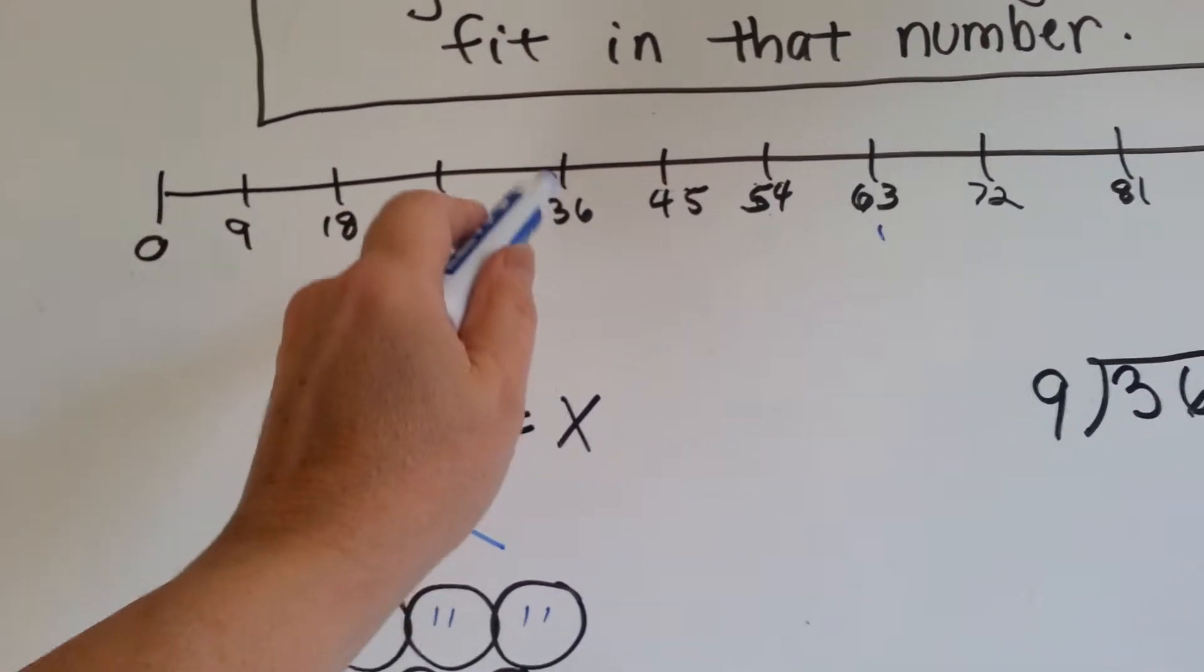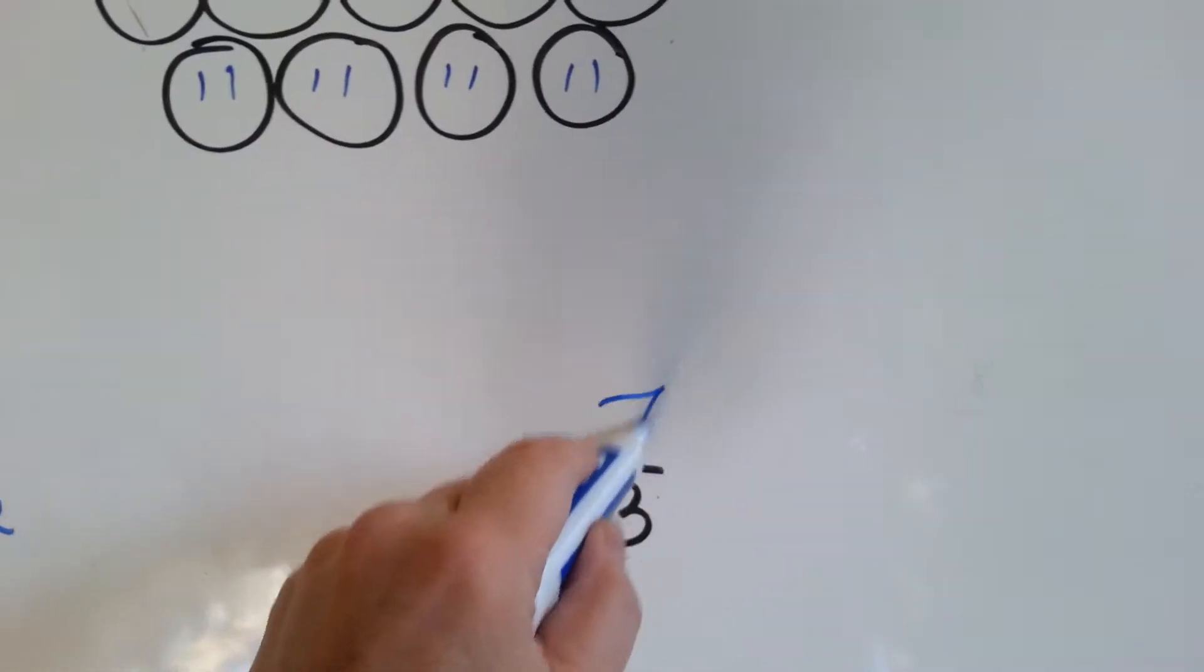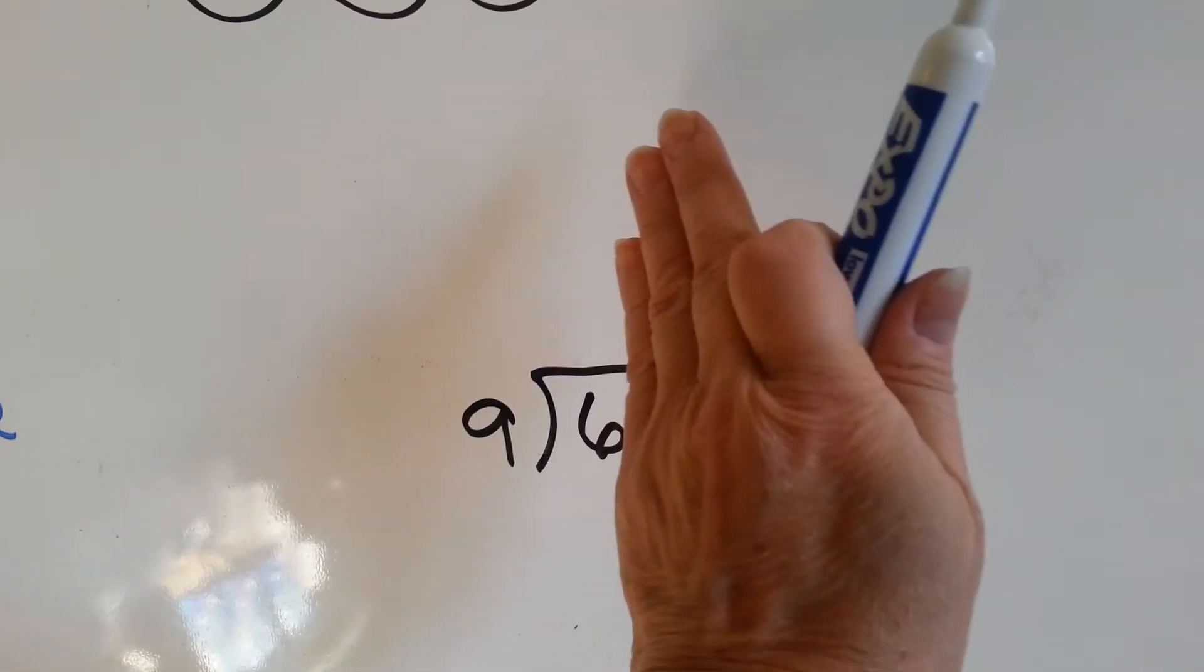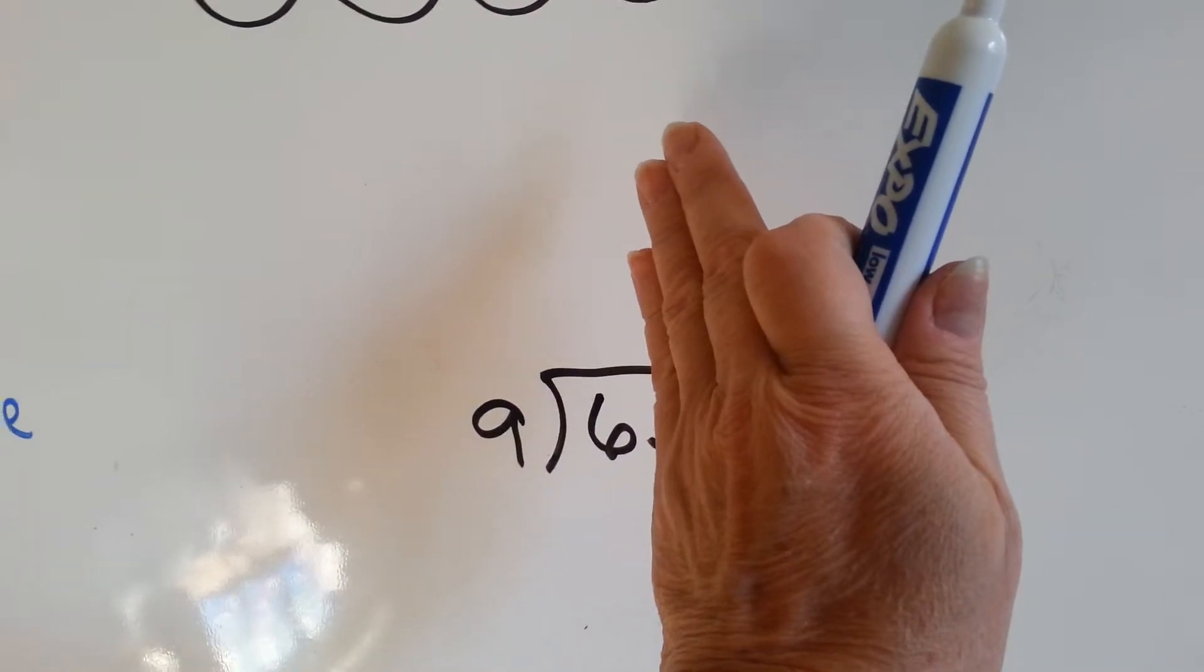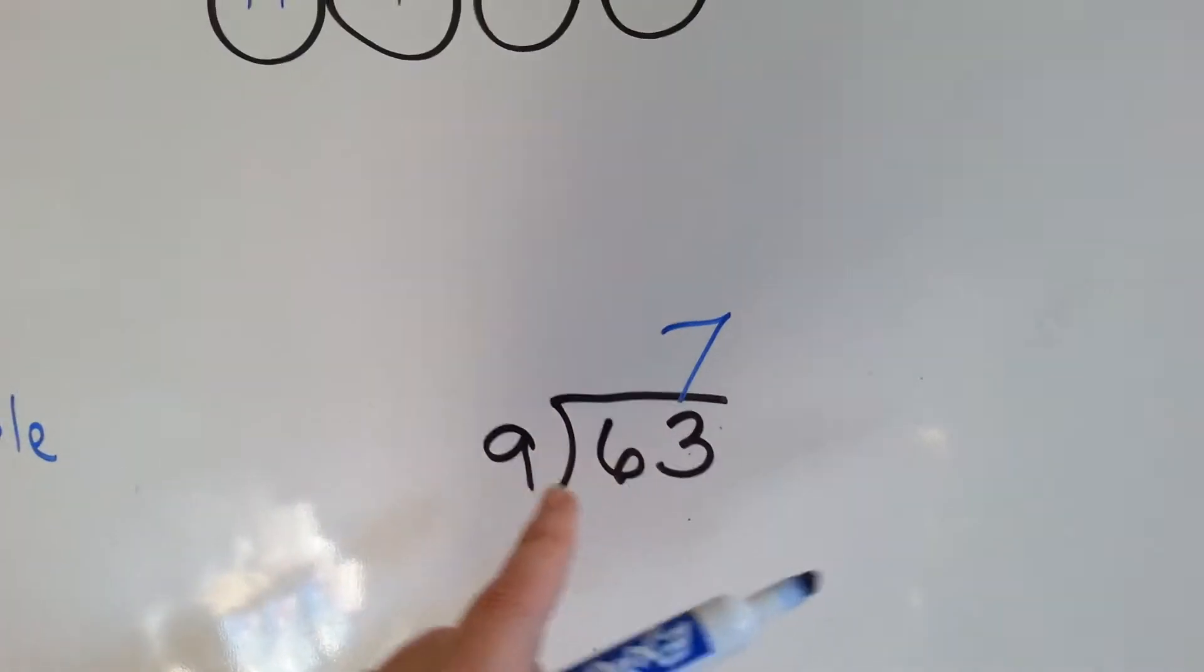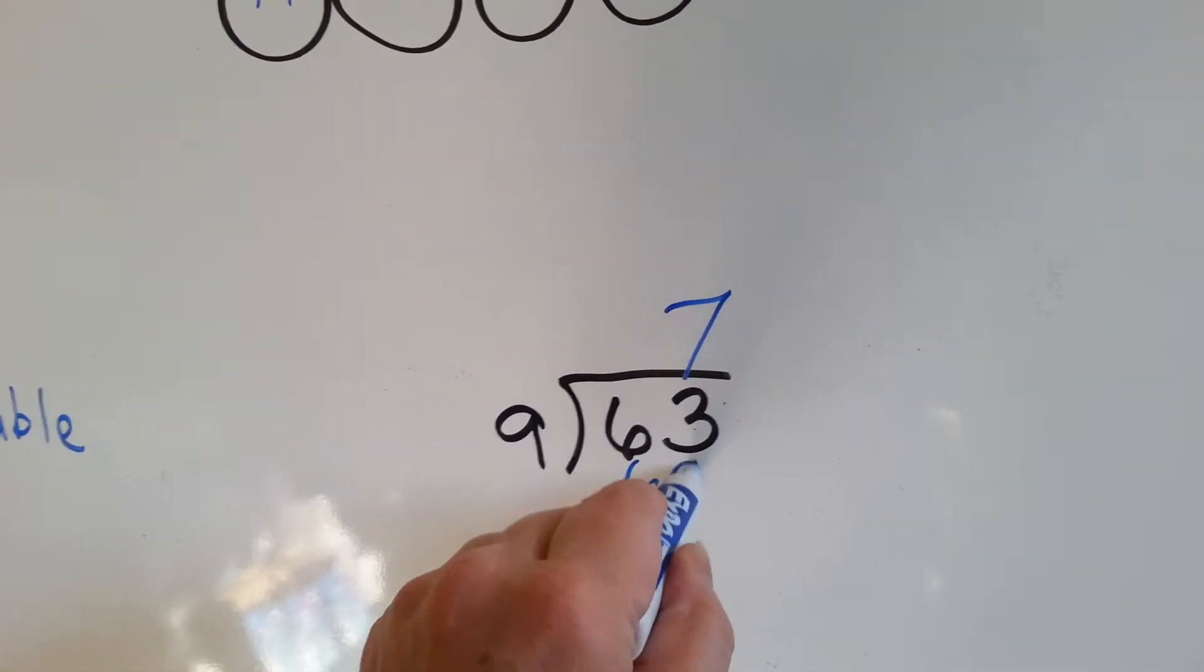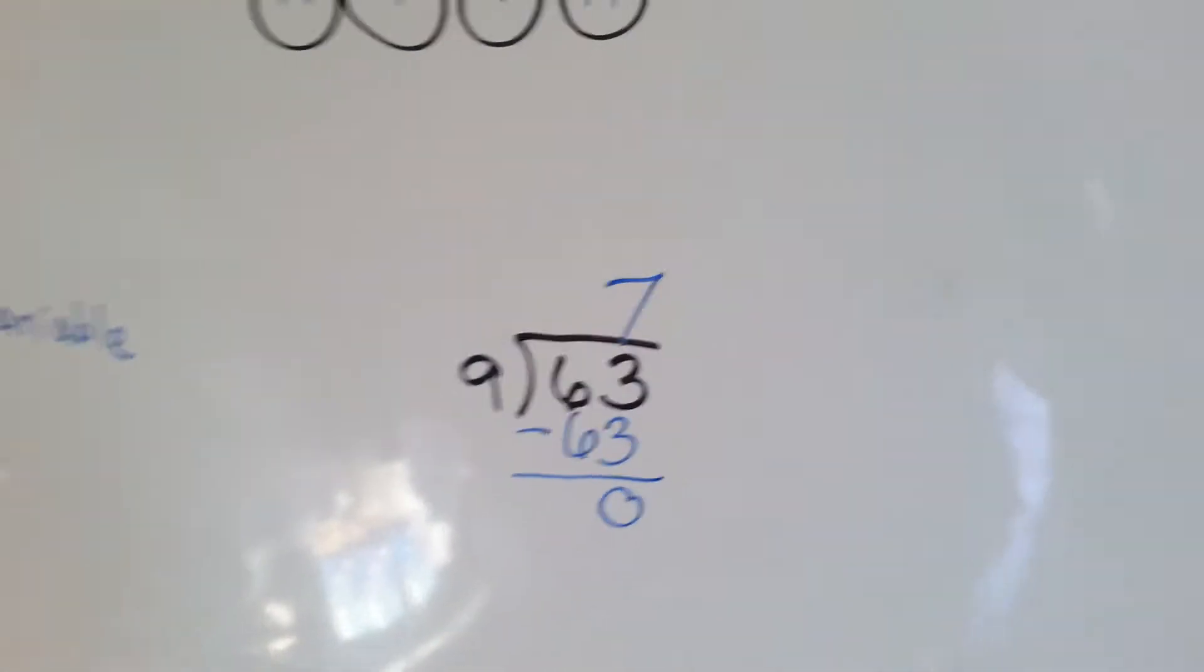1, 2, 3, 4, 5, 6, 7. We jump 7 times. And the 7 goes above the 3 because we're putting 9 into 63. We're not putting 9 into 6. If we were putting 9 into 6, which we know it won't fit, but if we did, then the answer would go above the 6. We're putting 9 into 63, so the 7 goes above the 3. Now we do our multiplication. 9 times 7, which is 63. We subtract and we get a remainder of 0.